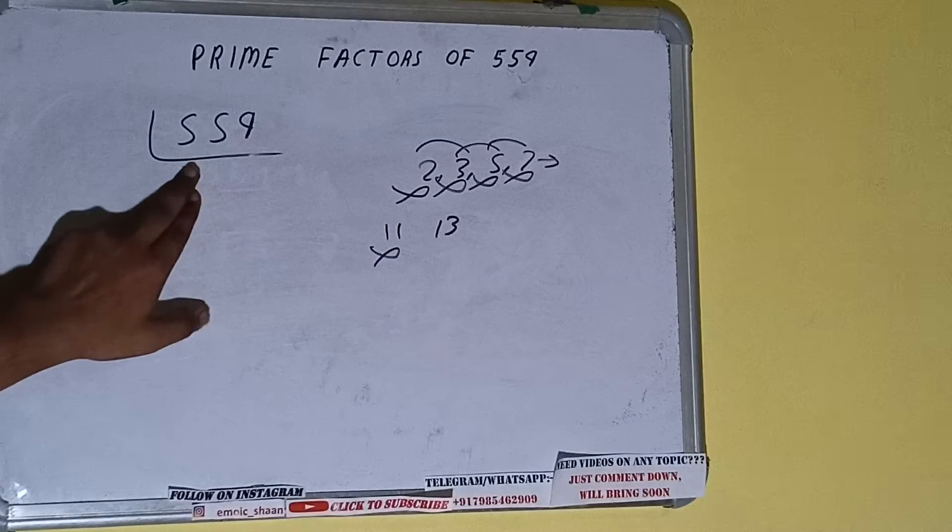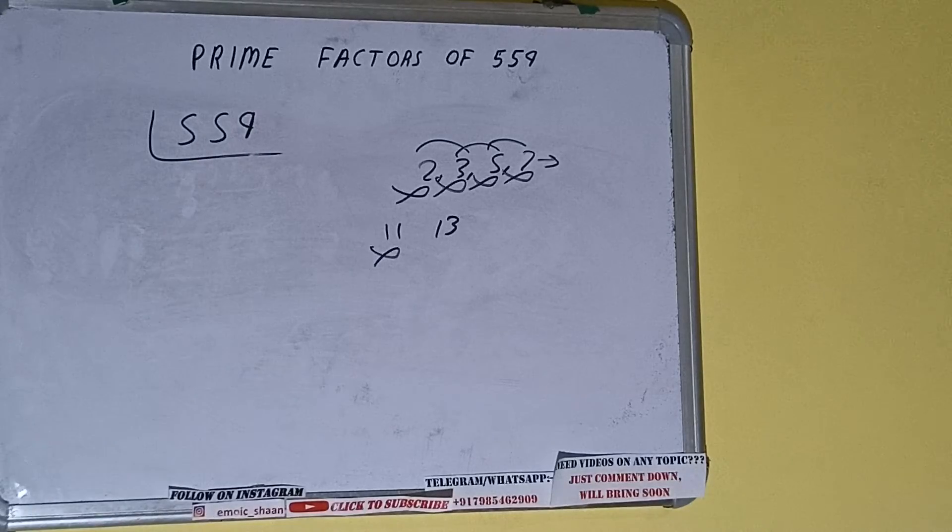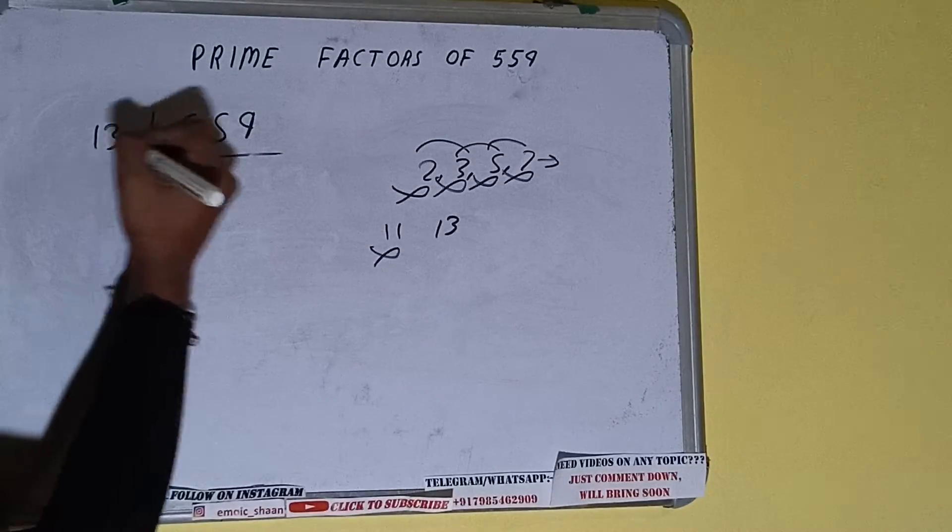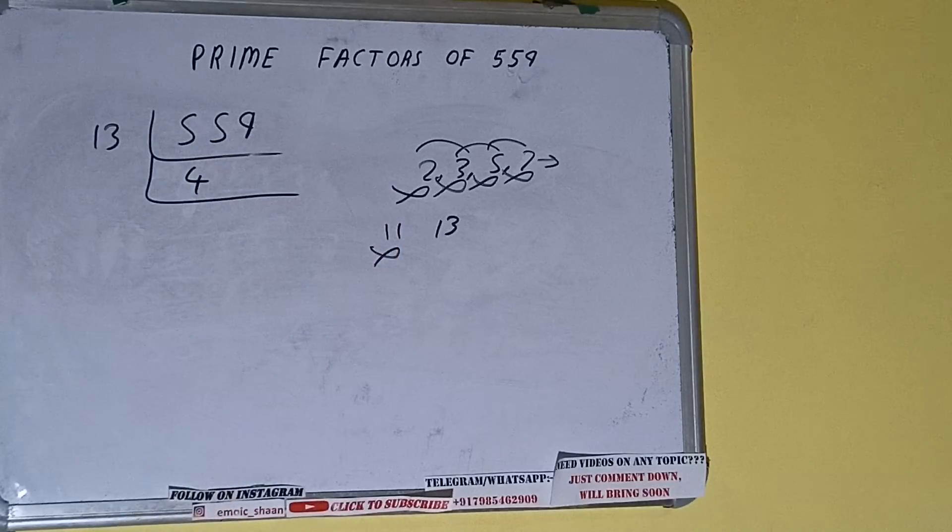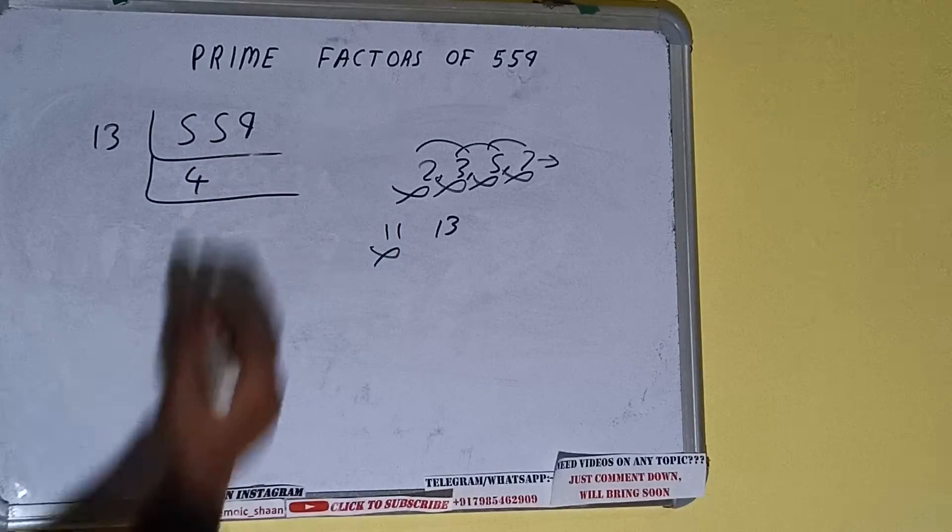Let's check with 13. [Checking divisibility] 4 times 13 is 52, bring down the 3, then 9. With 13 it is divisible, so divide it. 13 goes into 55 four times, that's 52. Bring down the 9. 13 goes into 39 three times, that's 39.